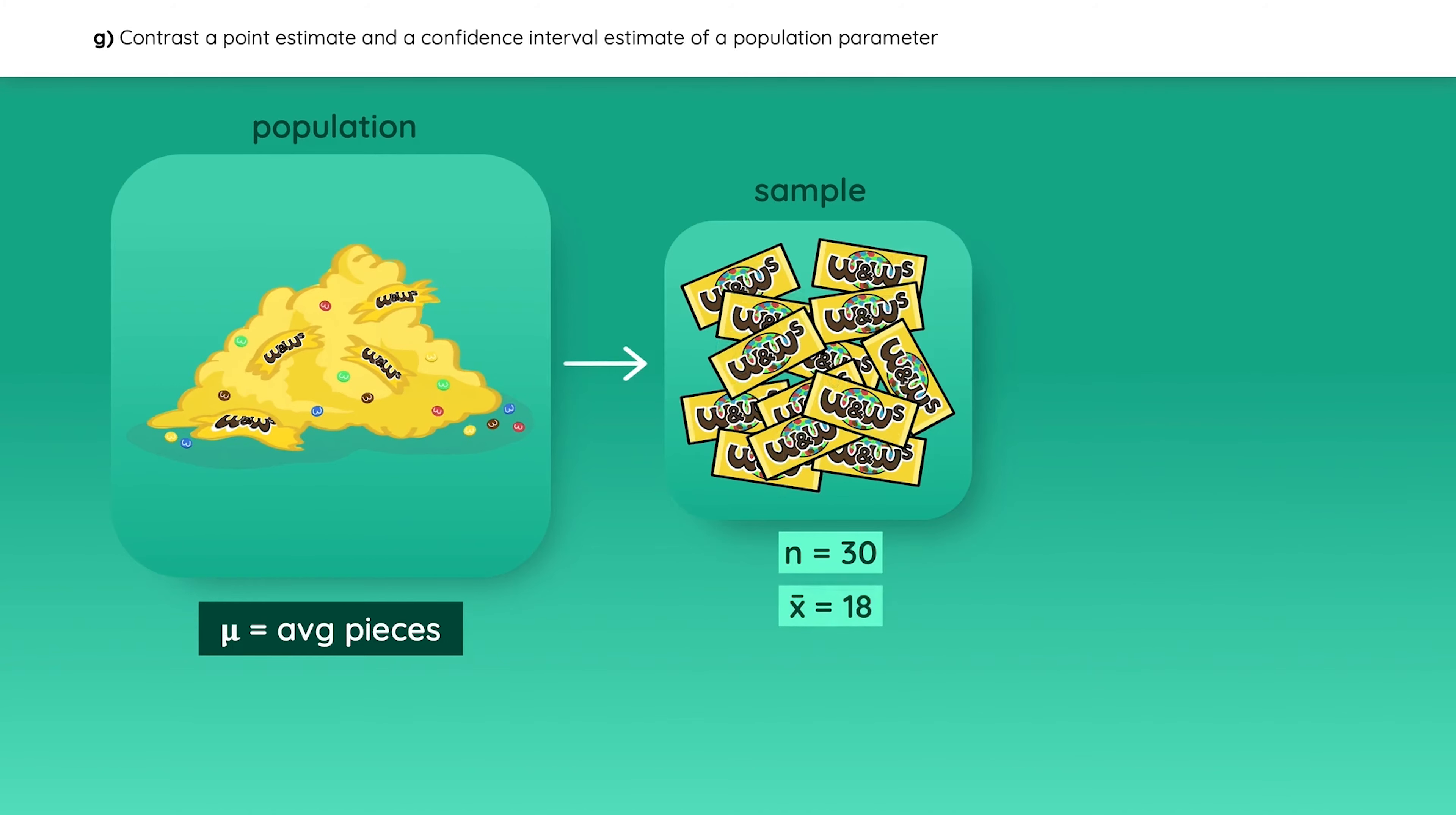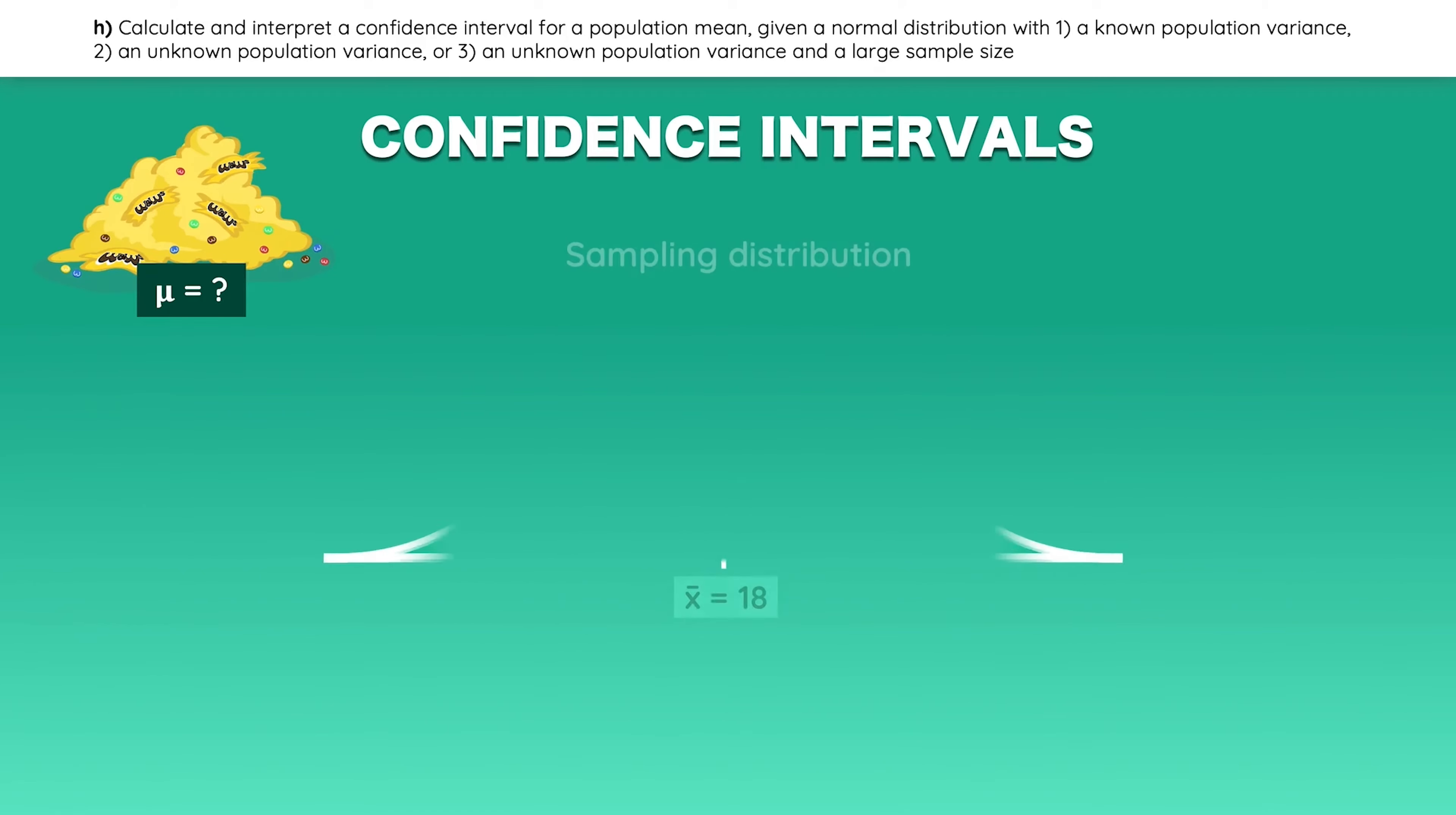So now we know that the average number of pieces per bag is 18 for this sample. The issue here is that samples are not perfect representations of the population, and you wouldn't want to give your boss an incorrect answer. So how can you estimate the population mean? To play it safe, what you can do is calculate a range of values by using a confidence interval, so let's review how to do that. Assume that the sample's mean is 18 pieces. With a 90% confidence interval, you can tell your boss that you are 90% sure that the population mean falls between values A and B. So let's actually calculate that confidence interval.